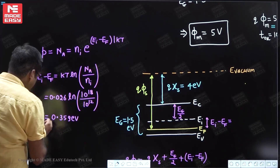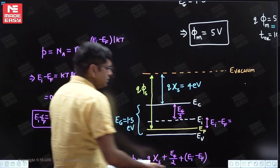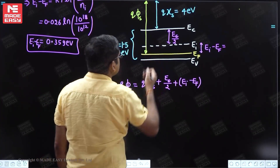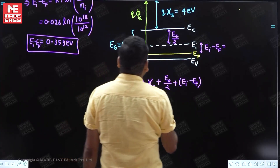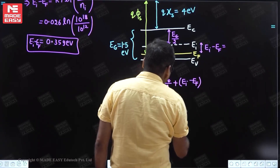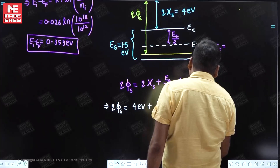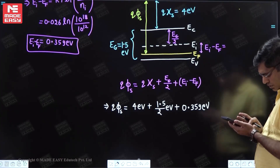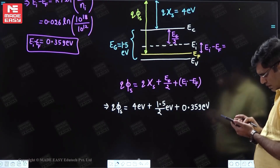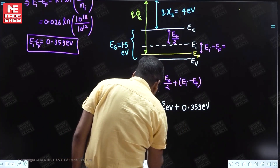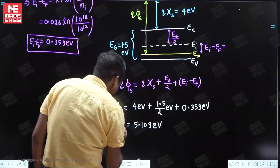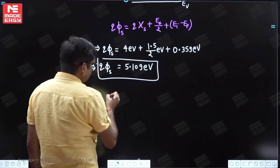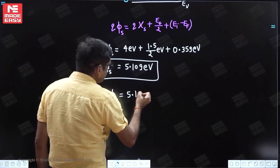Solving: 0.026 × ln(10^6) = 0.026 × 6 × ln(10) ≈ 0.359 eV. So E_i − E_f = 0.359 eV. Now we can calculate q*phi_s: q*phi_s = 4 + (1.5/2) + 0.359 = 4 + 0.75 + 0.359 = 5.109 eV. Since q cancels, phi_s = 5.109 V.